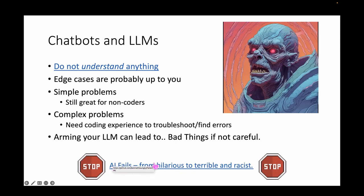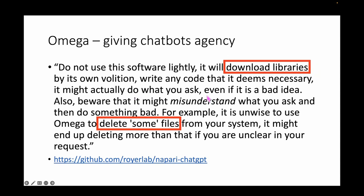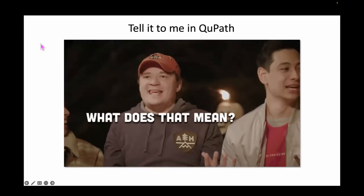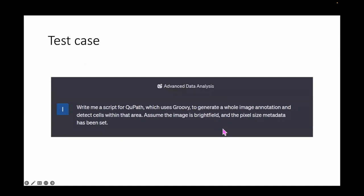There's a link here to a whole bunch of AI fails — some of them are funny, some are problematic — but if you ever want to convince yourself that AI is not immediately going to take over the world, these are pretty good. Regarding 'arming' LLMs with agency — for example Napari-Omega — the warning on the GitHub page states that depending on how you type your prompts it will download libraries you may not want, or if you ask it to delete some files it might delete all your files. You have to be very careful.